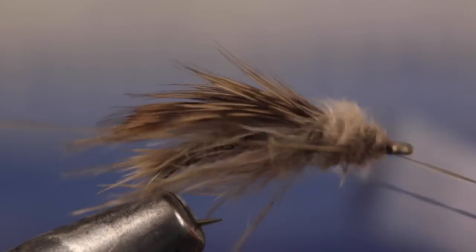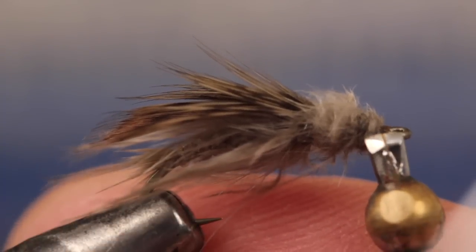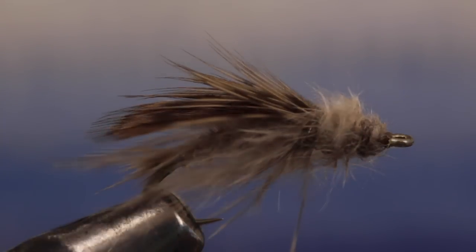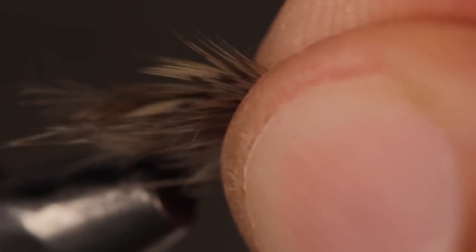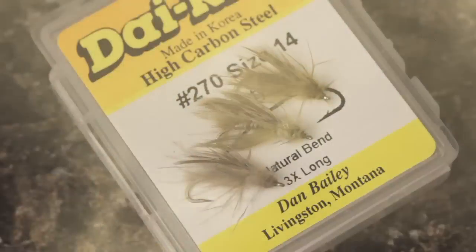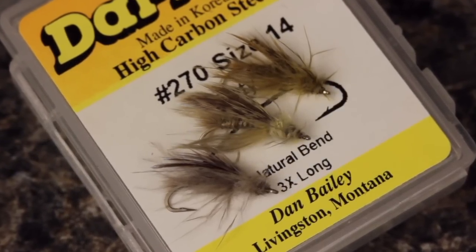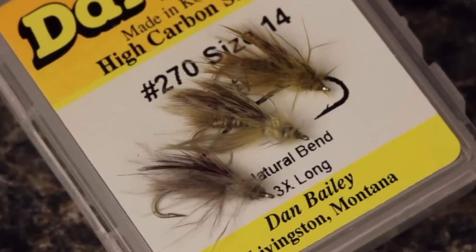Do a five or six turn whip finish to secure your tying thread and then snip or cut it off close. This pattern is about as buggy as it gets, which is a very good thing. Give them a try in different colors. And if you ever see Steve Schweitzer, tell him thank you for an excellent caddis emerger pattern.